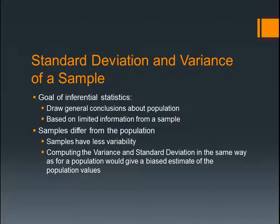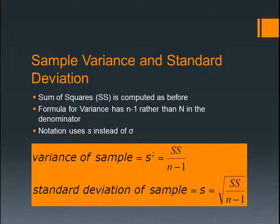Standard deviation and variance of a sample. The goal of inferential statistics, if you remember from chapter one, is to infer conclusions about your data. Samples differ from the population — they have less variability because you're pulling less information out, since a sample is a part of the population. Computing the variance and standard deviation in the same way as for a population would give a biased estimate, so you have to do it two separate ways. For sample variance and standard deviation, the sum of squares is computed as before, but the formula for variance has n minus 1 rather than n. The notation is S instead of the letter sigma.